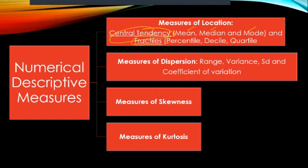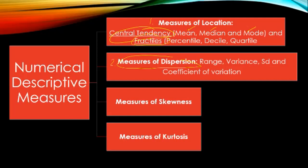Aside from measures of location, we also have measures of dispersion, measures of skewness, and measures of kurtosis. Measures of location describe one set of data, but if your objective is to compare two or more sets of data — specifically to know which group is more homogenous, more stable, or more consistent — that's where measures of dispersion come in.